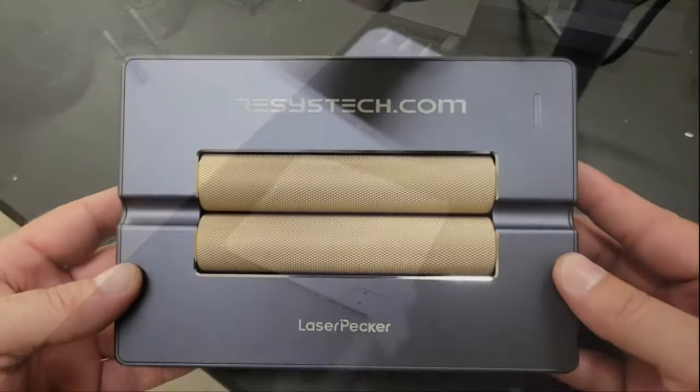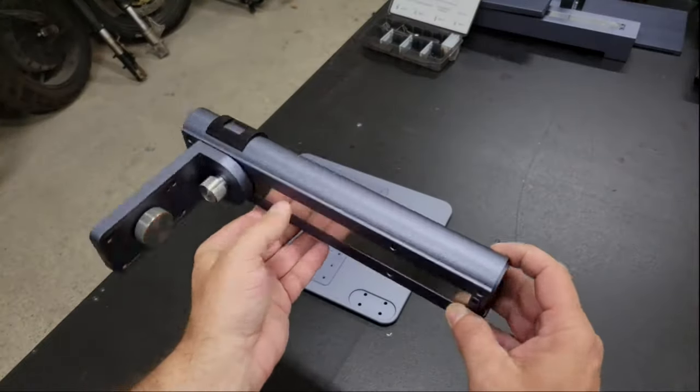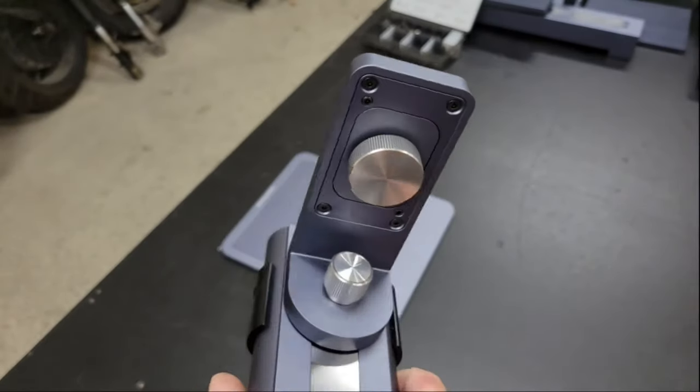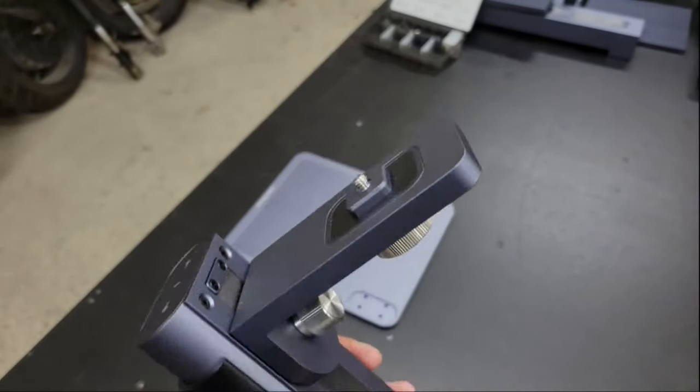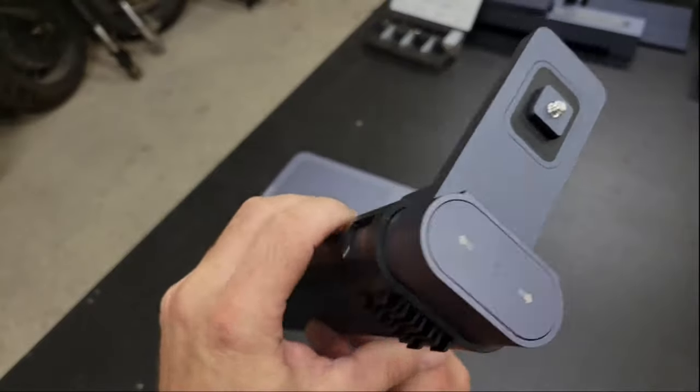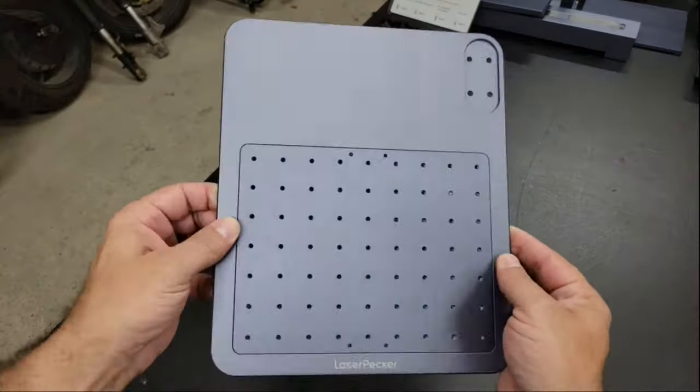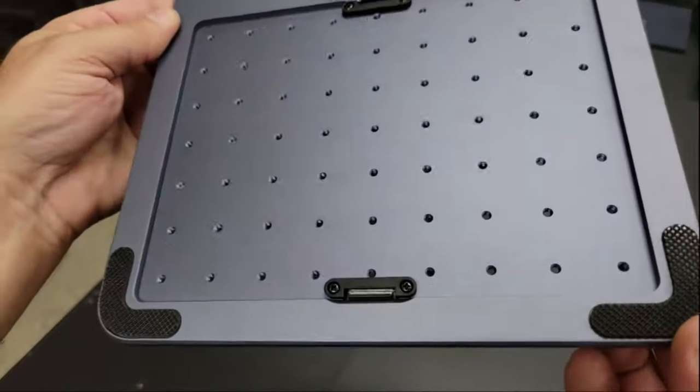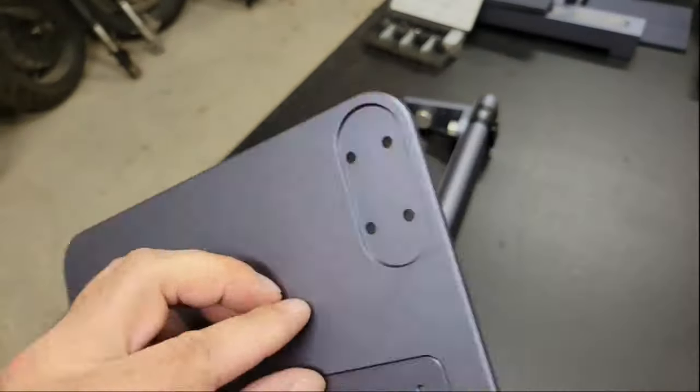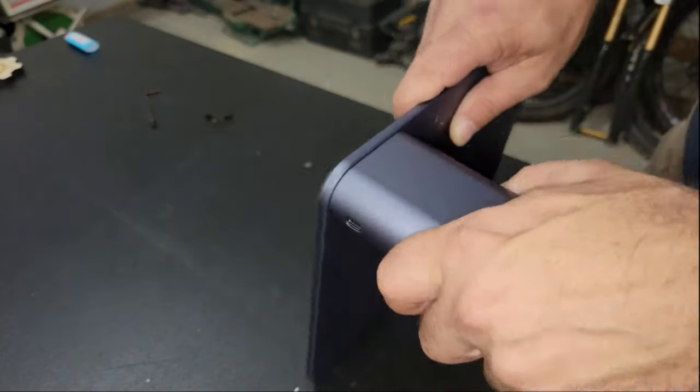The Laserpecker 4 looks similar to the Laserpecker 2 and the Laserpecker 3 and has all of the basic functions that they do such as the electric stand and portability, but it's a much larger machine with a more robust design and for good reason. The LP4 is the world's first portable dual laser engraver. The module for this machine houses both a 10 watt blue diode laser and a 2 watt infrared laser.